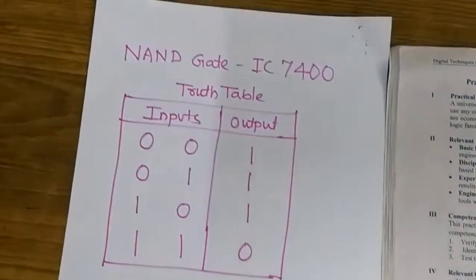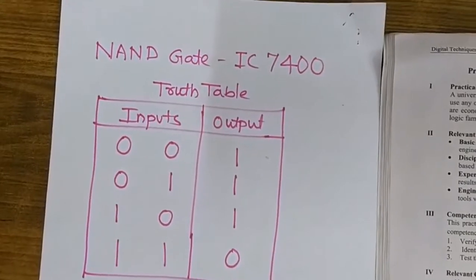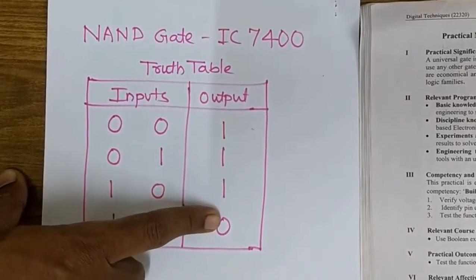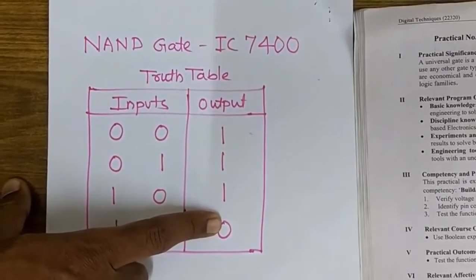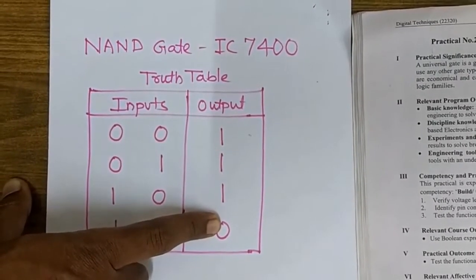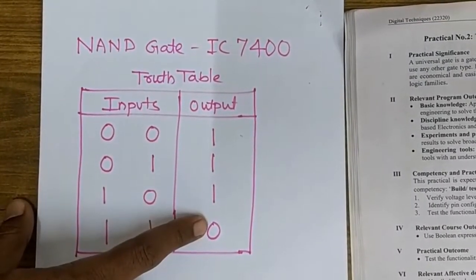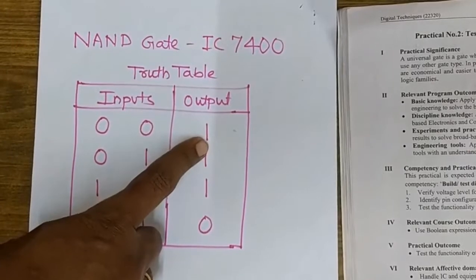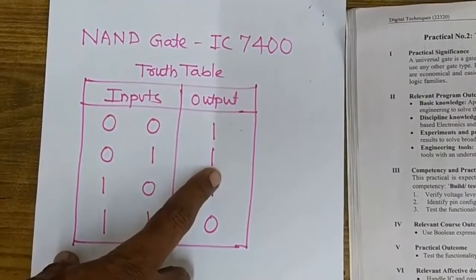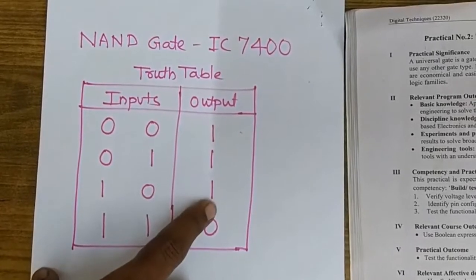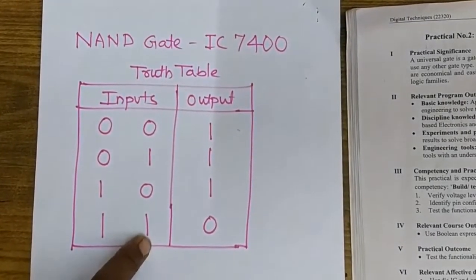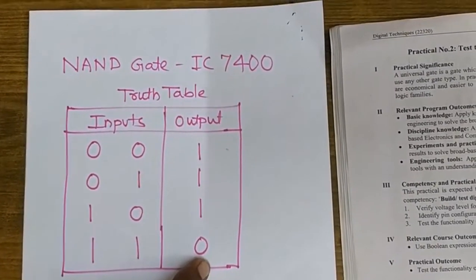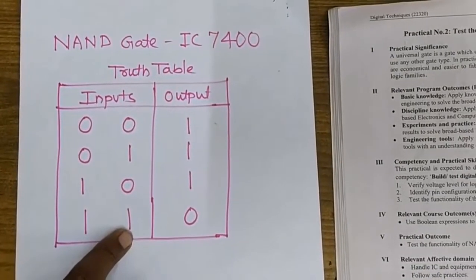Looking at the truth table of NAND gate: the outputs are exactly opposite to those of an AND gate, because NAND gate is a combination of AND gate and NOT gate. When input is 0,0 output is 1; when input is 0,1 output is 1; when input is 1,0 output is 1; and when input is 1,1 output is 0. In short, output is 0 only when both inputs are 1.